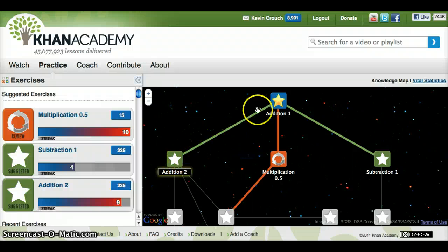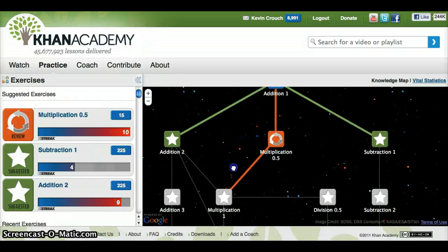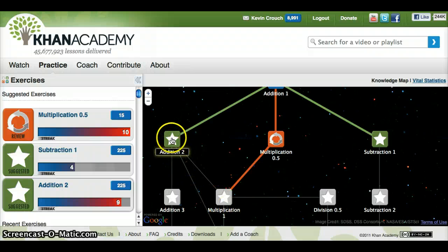It shows you if you do Addition 1, you can move on to Addition 2 and Subtraction. In order to do Multiplication 1, it suggests that you do Addition 2 and Multiplication 0.5, and you'll have the skills to do this.